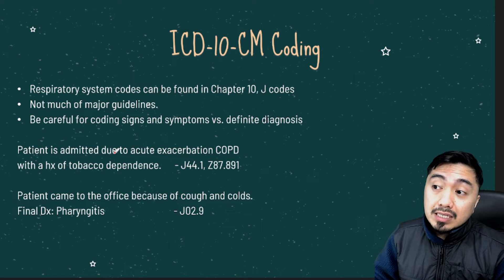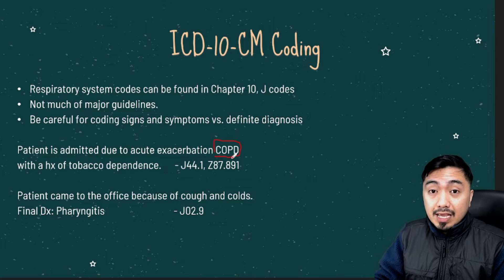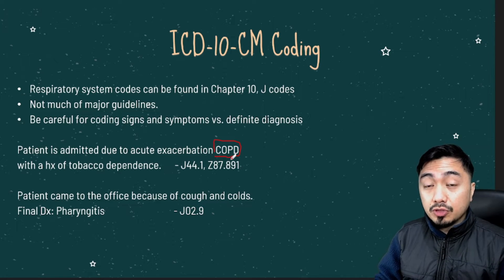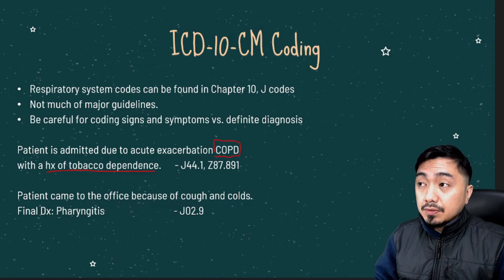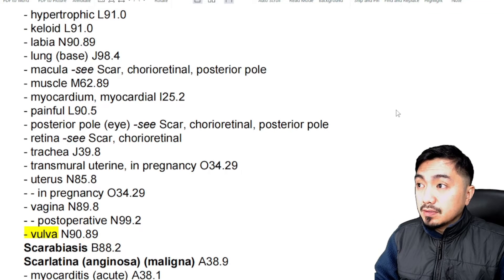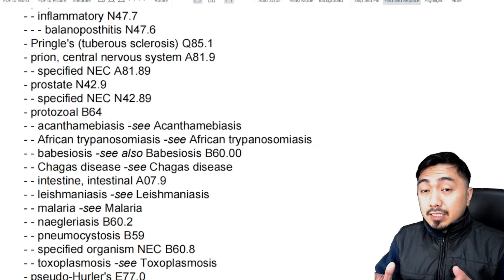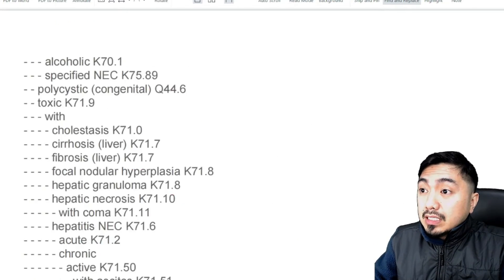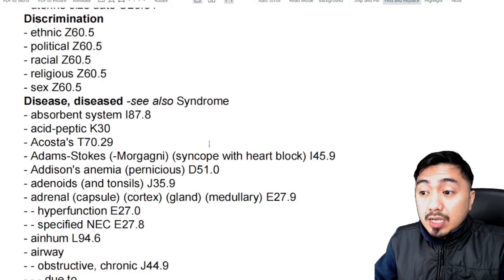Let's have some examples. Patient is admitted due to acute exacerbation of COPD, which means chronic obstructive pulmonary disease, with a history of tobacco dependence. To identify the codes, go to the alphabetic index and find the term 'disease,' then locate 'pulmonary disease' under letter P. From there, find 'chronic obstructive.' Since it's mentioned as acute exacerbation, check that term as well.